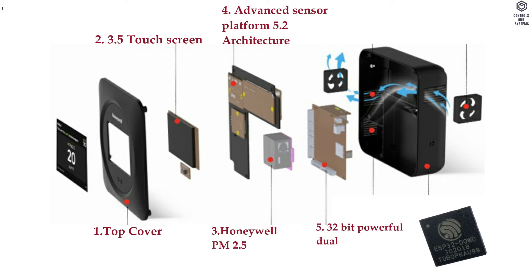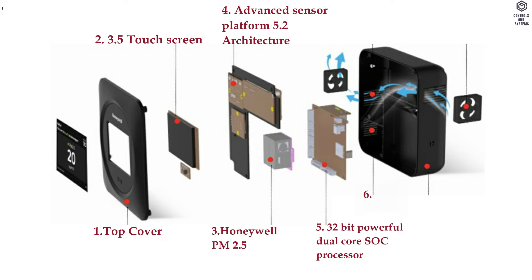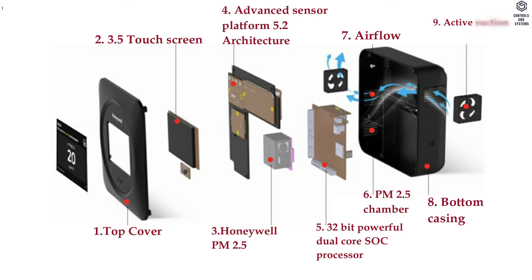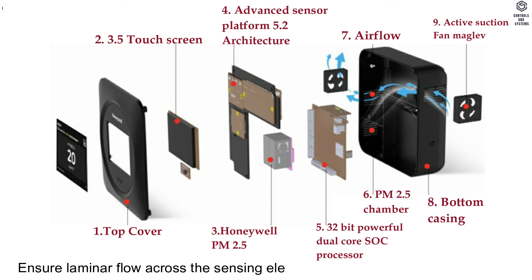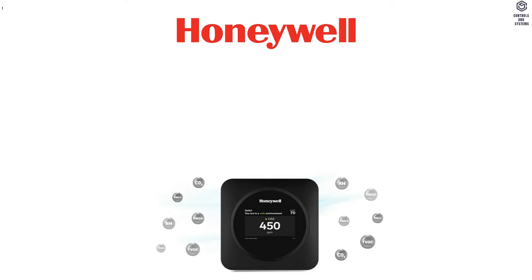4. Advanced sensor platform 5.2 architecture — modular sensor array with grouped and predefined sensors, analog and UART. 5. 32-bit powerful dual-core SOC processor. 6. PM2.5 chamber. 7. Airflow. 8. Bottom casing. 9. Active suction fan (maglev) to ensure laminar flow across the sensing elements.